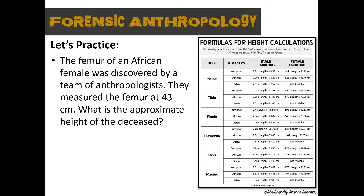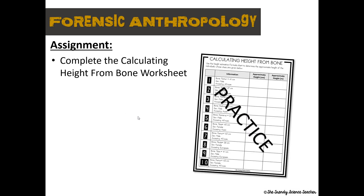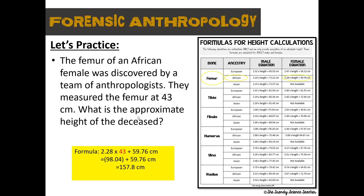We have the femur of an African female, and their femur measured 43 centimeters. To find the approximate height, we find femur with African ancestry for a female: the formula is 2.28 times the length plus 59.76. So 2.28 × 43 = 98.04, plus 59.76 gives a total height of 157.8 centimeters — roughly about five foot two or five foot three inches. Use that chart with your worksheet to find the approximate heights of the individuals in your practice problems.